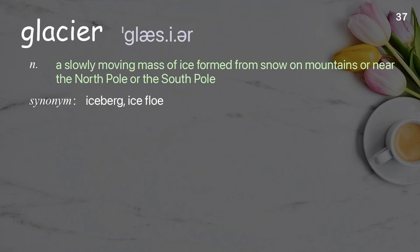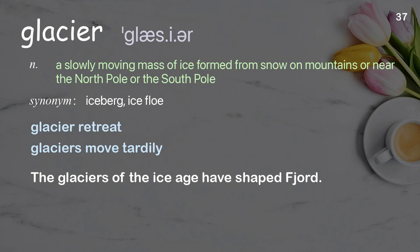Glacier: A slowly moving mass of ice formed from snow on mountains or near the North Pole or the South Pole. Examples: glacier retreat, glaciers move tardily. The glaciers of the Ice Age have shaped fjords.